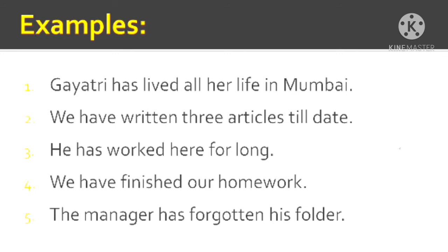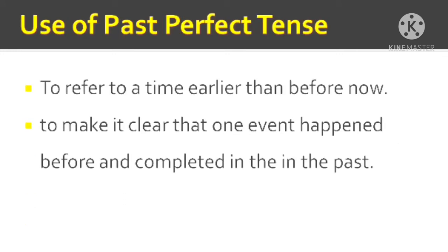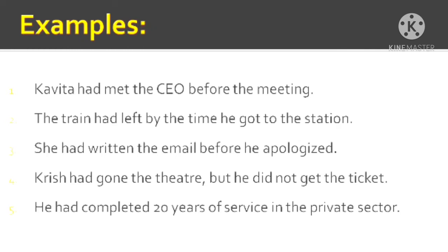Now let us switch over to the use of past perfect tense in English. Generally, we use the past perfect tense to refer to a time earlier than before now — the action started in the past and completed in the past. We use it to make clear that one event happened before another: the distant past completed first, followed by the nearer past. Let us look at a few sentences.